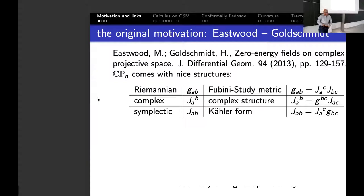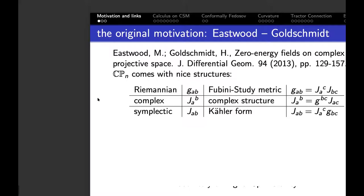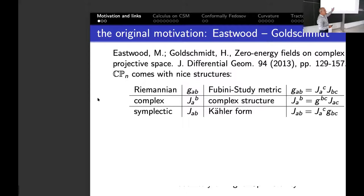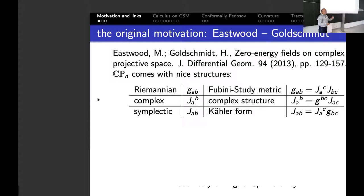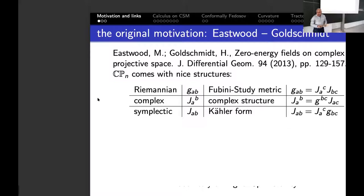Let's first look at CPn itself. CPn has three structures: it's a Kähler space where you have the Fubini-Study metric, the complex structure, and the Kähler form. These three guys sit very nicely together as you can see in the table. J_bc is the symplectic form with indices down, and if it had indices up it's the inverse of the symplectic form as a matrix. You can get J_ca by pushing up the indices — we shall have to be careful because sometimes we have the metric and sometimes the symplectic form, and indices will be pushed up and down accordingly.